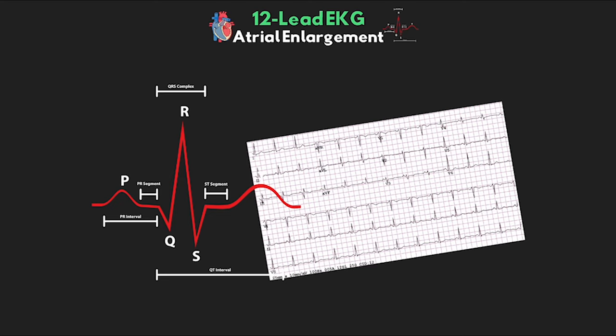As we're nearing the end of this series on the 12-lead EKGs, and before we really get into the big topic of ischemia and infarction, one last thing I want to review are the changes in morphology that we see with enlarged chambers, both the atria and ventricles. In this short lesson, we'll talk about atrial enlargement and the classic characteristics that will be present in our EKG.